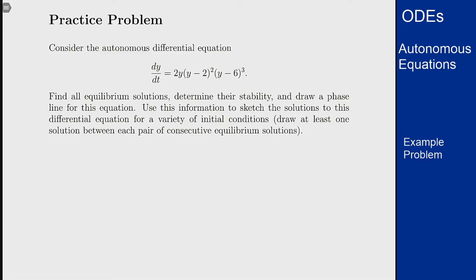In this example, we will analyze an autonomous equation and see what we can figure out about the solutions by looking at the equation itself. We have this autonomous differential equation here: dy/dt = 2y(y-2)²(y-6)³. I want to find the equilibrium solutions, determine their stability, draw a phase line, and sketch graphs of the solutions.